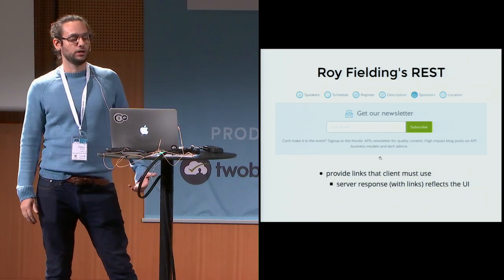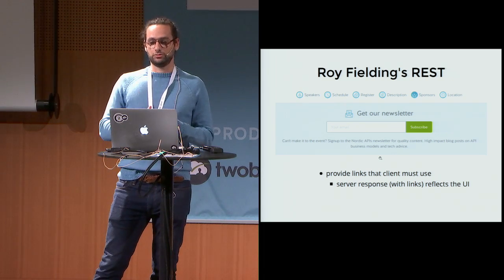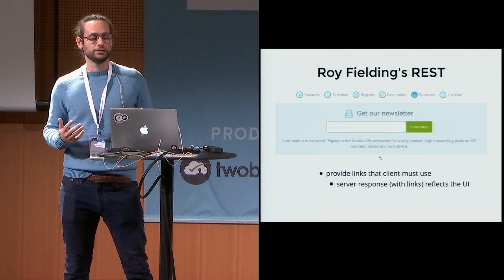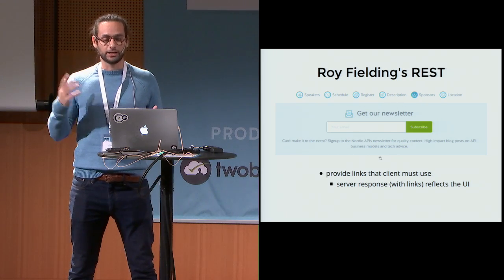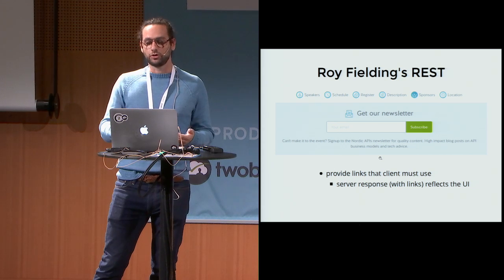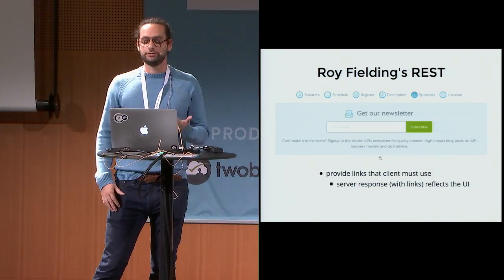If we go REST by the book, with a simple app starting from the Nordic APIs web page, and we want a mobile client to render that page, it means the server has to drive the client — give all the information about what it's allowed to do. For instance, if there's a form, the client should get from the server what the form accepts: which attributes, what media type (like JSON), and any links about speakers. So in a way, the server response reflects the UI.